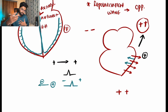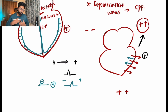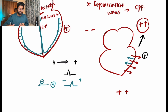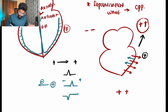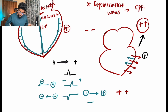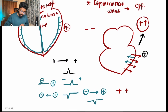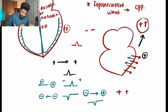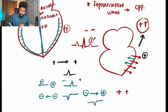If a positive current moves towards a positive electrode, we get a positive deflection on the ECG. If a negative thing moves away from us, we still benefit — meaning we get a positive deflection. But if the negative current moves towards the positive electrode, we get a negative deflection. This is why P wave and QRS are positive, and the T wave, though a repolarization wave carrying negative current, is still positive.